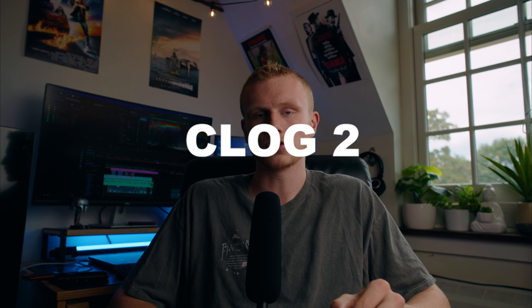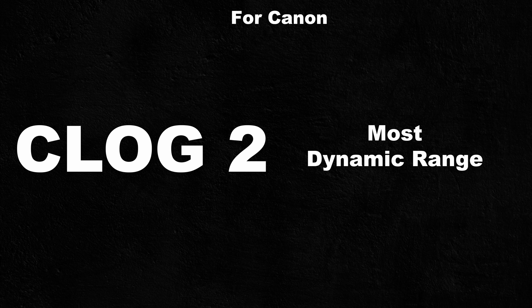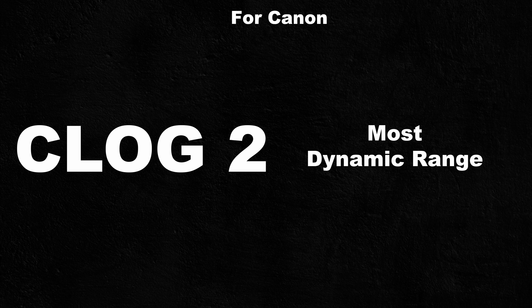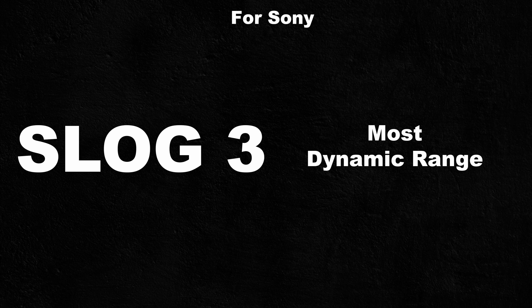There are a couple different log options depending on which camera you have. For Canon cameras, there's C-Log, C-Log2, and C-Log3. C-Log2 actually has the most dynamic range, while C-Log3 and C-Log have a little less. For Sony, there's S-Log1, 2, and 3, and S-Log3 has the most dynamic range, while S-Log1 and 2 have slightly less. My recommendation is to always shoot the most dynamic range possible, so C-Log2 or S-Log3.